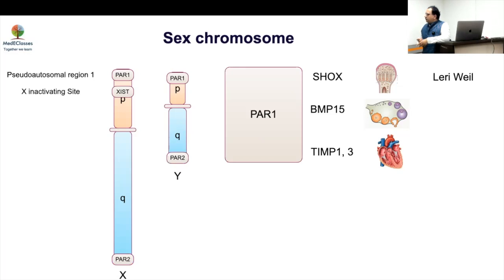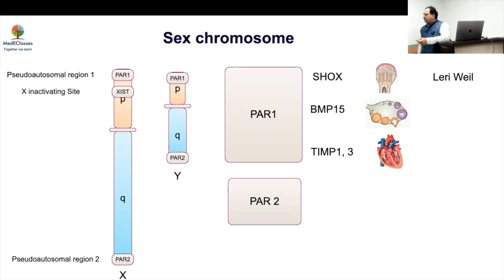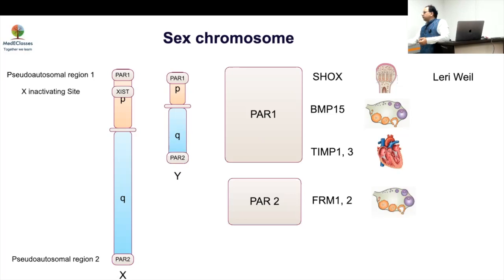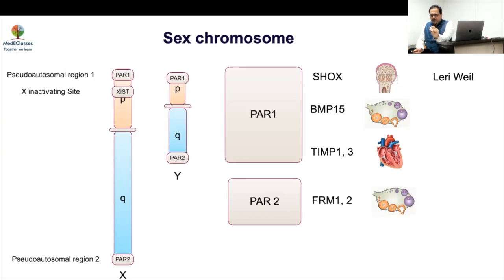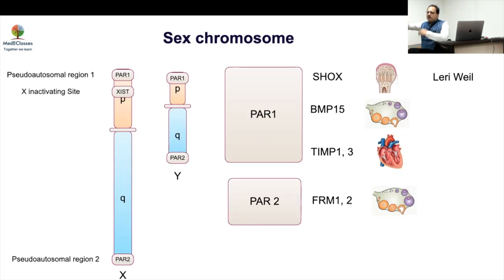The second pseudo-autosomal region, PAR2, is on the Q arm — the long arm. The most important gene here is related to fragile X mutations (FMR1), which are responsible for some ovarian functions. If a girl has a deletion in the PAR2 region, the major manifestation will be ovarian failure. She may not have the SHOX defect, cardiac defect, or lymphedema.